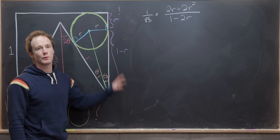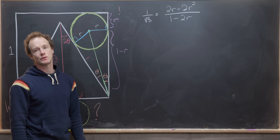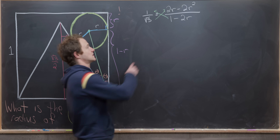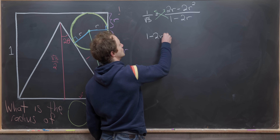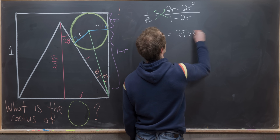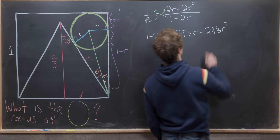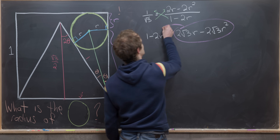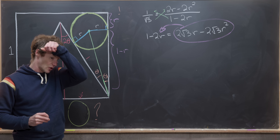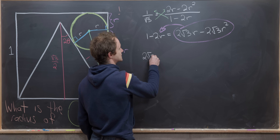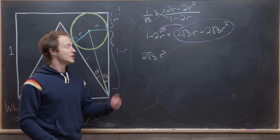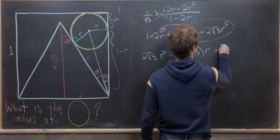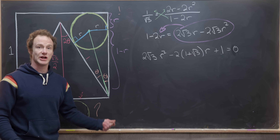Cross-multiplying gives 1 − 2r = 2√3·r − 2√3·r². Moving all terms to one side so the leading coefficient is positive, we get: 2√3·r² − 2(1 + √3)·r + 1 = 0.